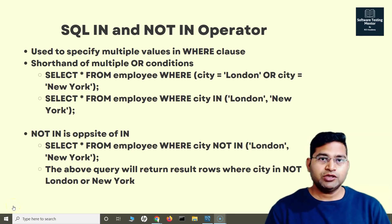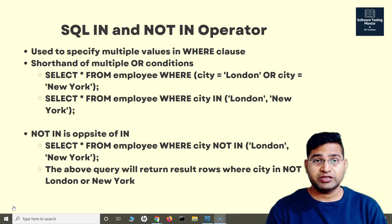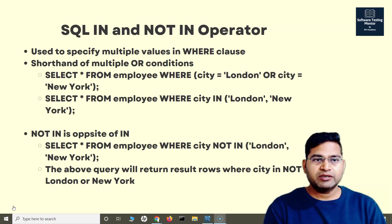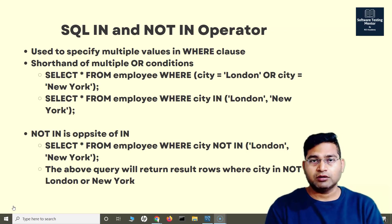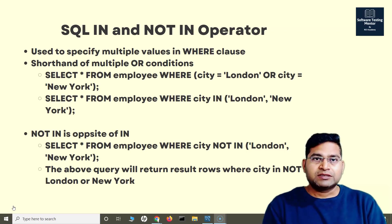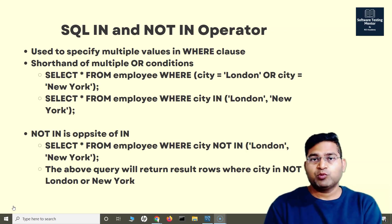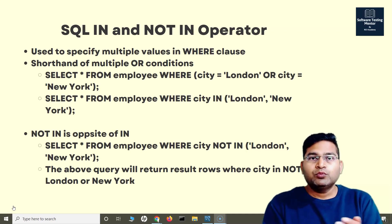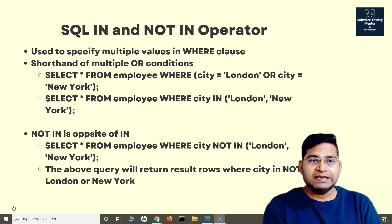Hey everyone, welcome back. In this SQL tutorial we are going to understand the SQL IN and NOT IN operators. The IN operator is used to specify multiple values in a WHERE clause. For example, if we are selecting all values from the employee table where city is equal to London or city is equal to New York, we can use a shorthand which is IN to do the same sort of query.